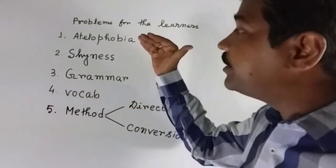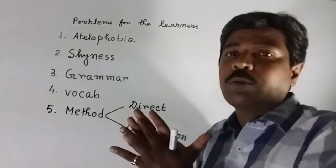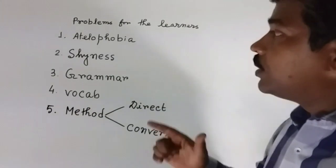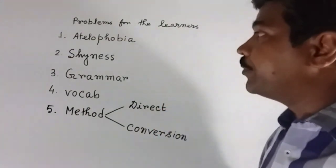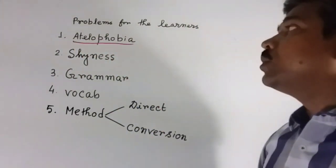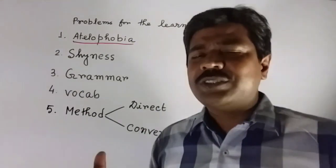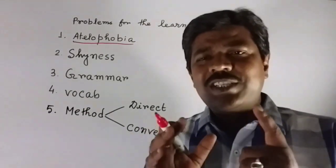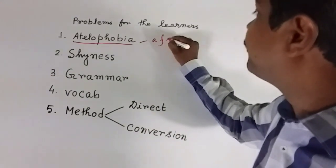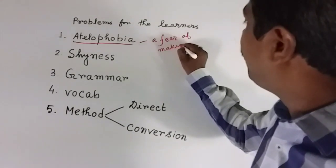These are the basic problems which we suffer from, so first of all we have to resolve those problems and then start learning. The first one is atychiphobia — this is the most important thing which disturbs us a lot, and for this reason we are unable to speak English properly or communicate properly. Atychiphobia is nothing but a negative mindset — it means a fear of making mistakes.